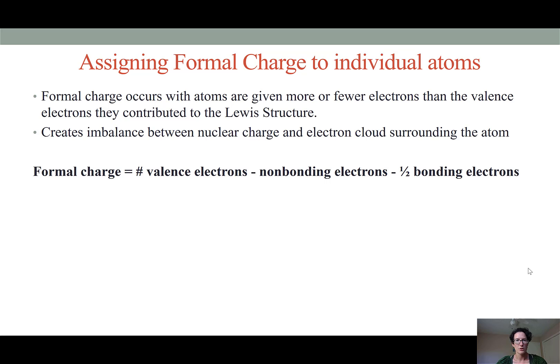When we are drawing Lewis structures, sometimes in satisfying the octet rule, we may give a particular atom more electrons around it than it actually brought when counting the contribution of valence electrons from each atom. When we have more electrons around an atom than it had as valence electrons to begin with, this creates an imbalance between the nuclear charge and the electron cloud surrounding it. We can measure this imbalance using the equation for formal charge.